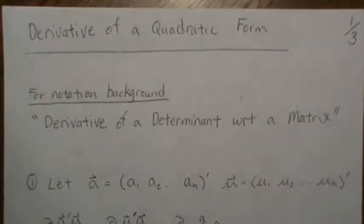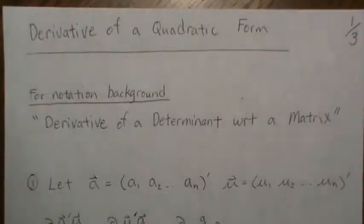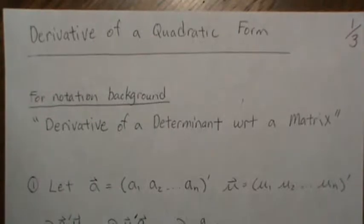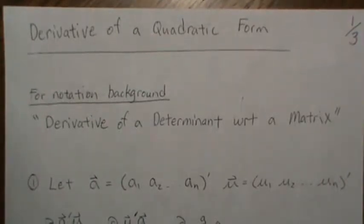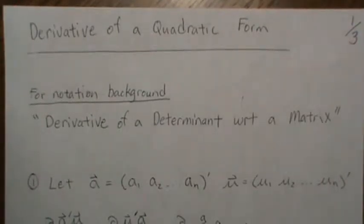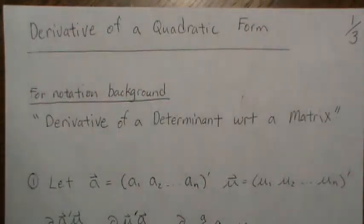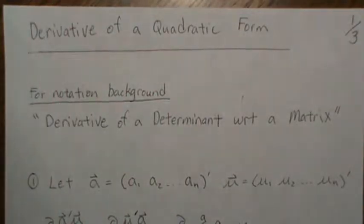Hello. In this video we're going to look at the derivative of a quadratic form with respect to a vector. We're really doing these videos leading up to finding the maximum likelihood estimates for a multivariate normal distribution.